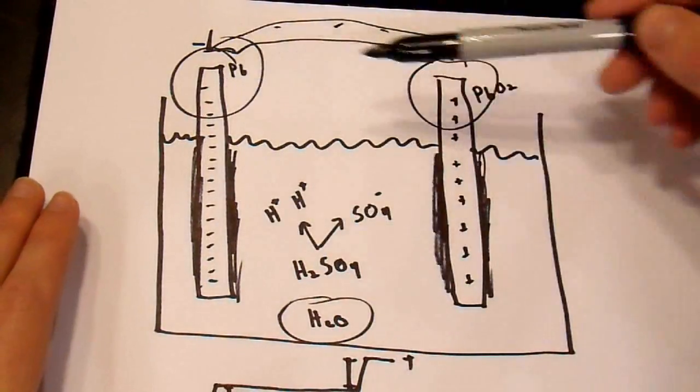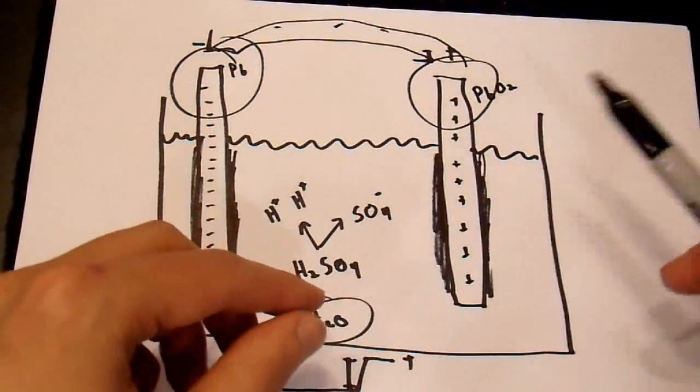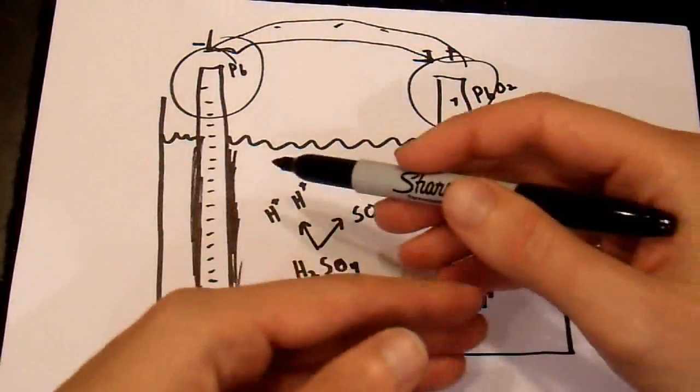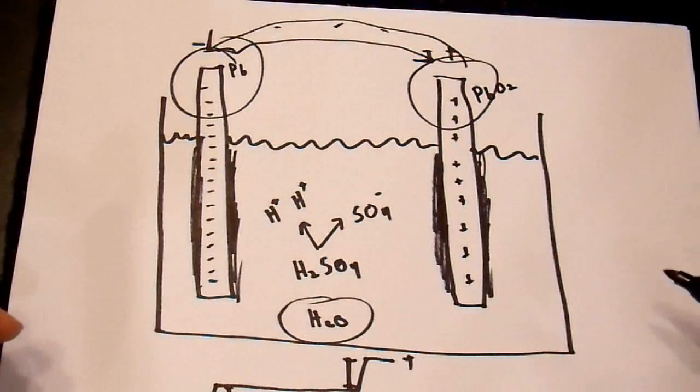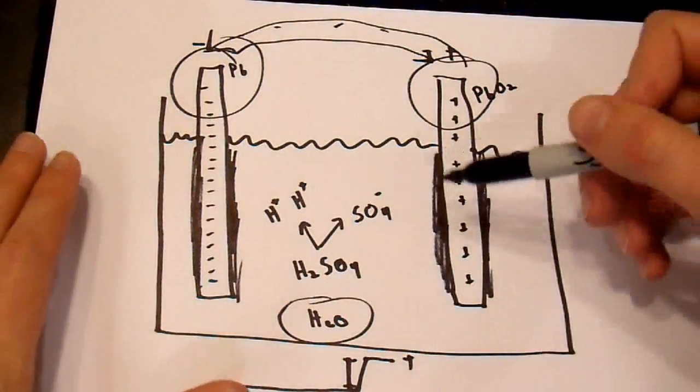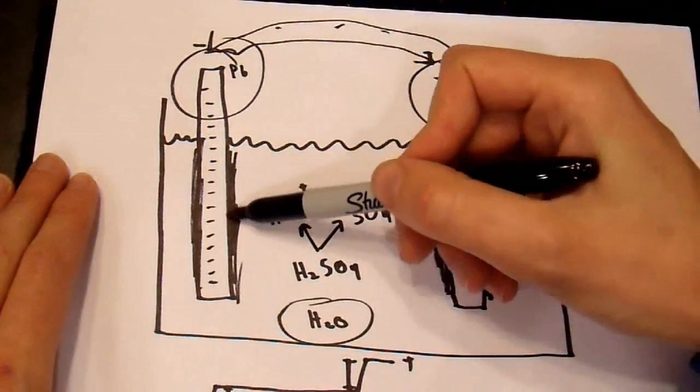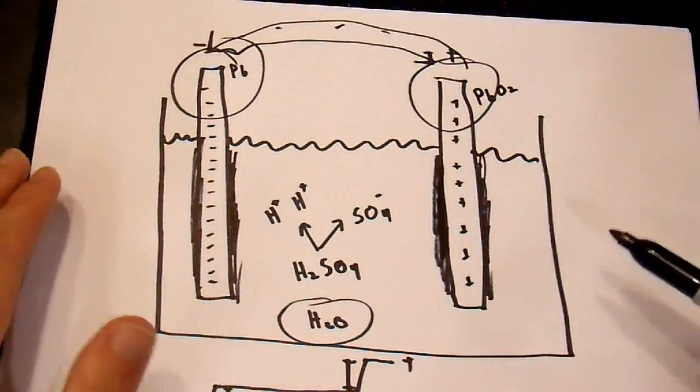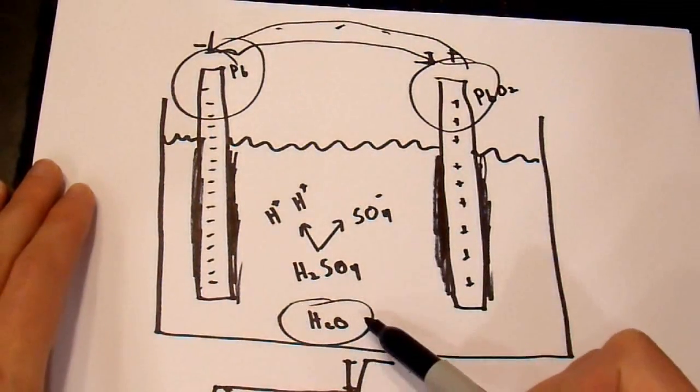There is charge accumulated over here, over here. The distribution of these ions in the electrolyte moves around. And, there are a lot of factors that affect this. How close these terminals are. How much sulfate is on both of these terminals, etc. The concentration of the acid.